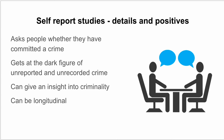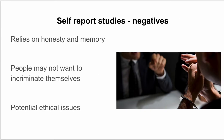However, self-report studies, like victim surveys, rely on honesty and memory. Respondents might not remember committing a crime, or due to interviewer effect they might claim to have committed more crimes than they actually have. They might also not want to incriminate themselves for serious offences. There can also be ethical issues if a sociologist discovers someone has been committing serious crimes the police don't know about — as a sociologist, you may feel you should report that, which creates a dilemma.